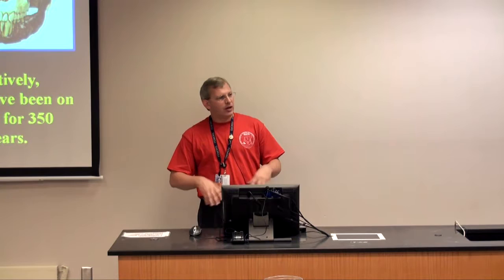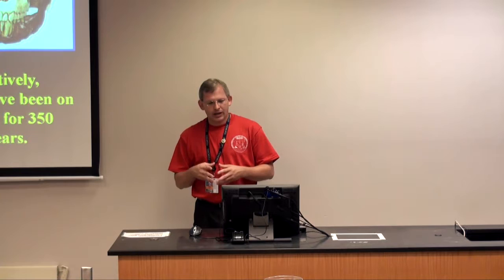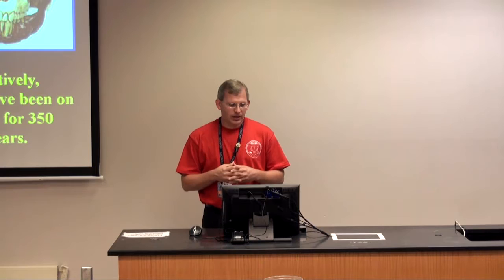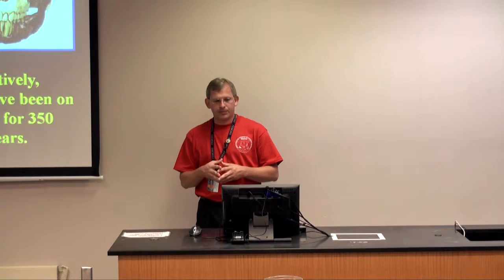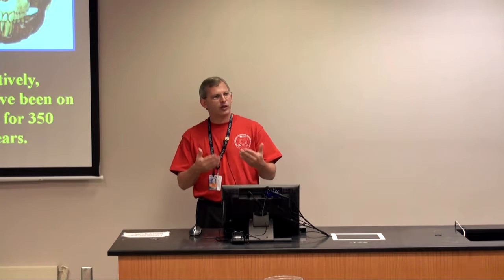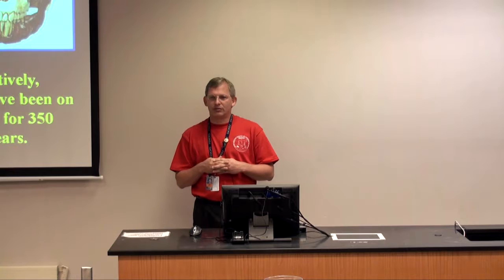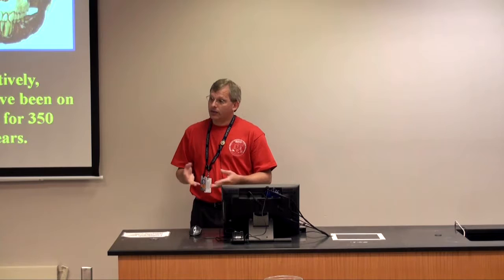Humans have been around in upright bipedal form for approximately seven million years, while insects have been around for about 350 million years. They were here before dinosaurs and before flowering plants, and have adapted perfectly to their environment. Many forensically important insects have a life cycle of a month or less, so having repeated that cycle for 350 million years, they've become very good at seeking out decomposing remains to ensure the survival of their offspring.